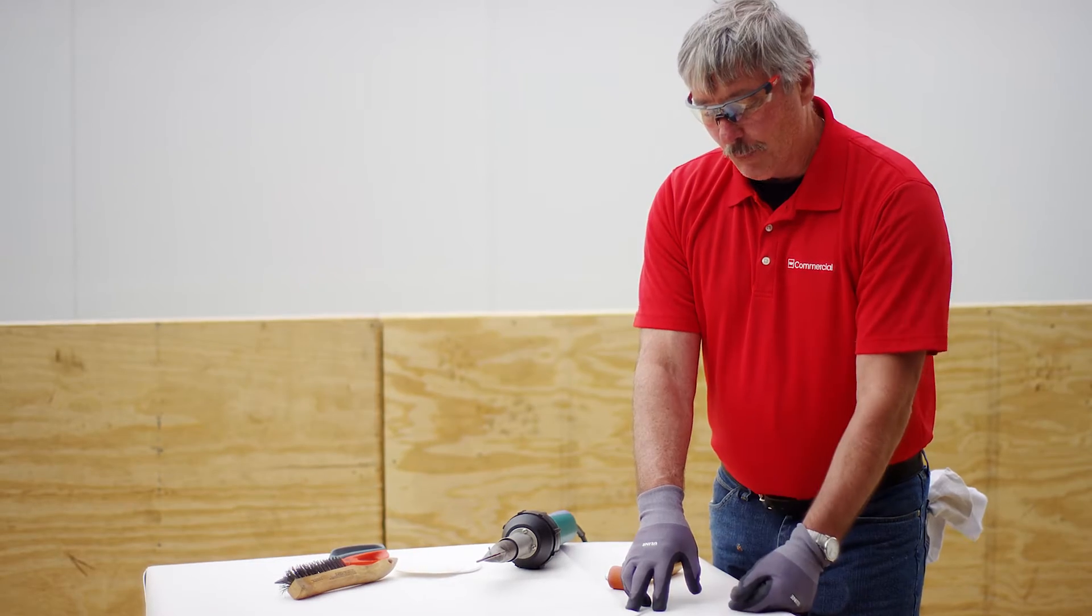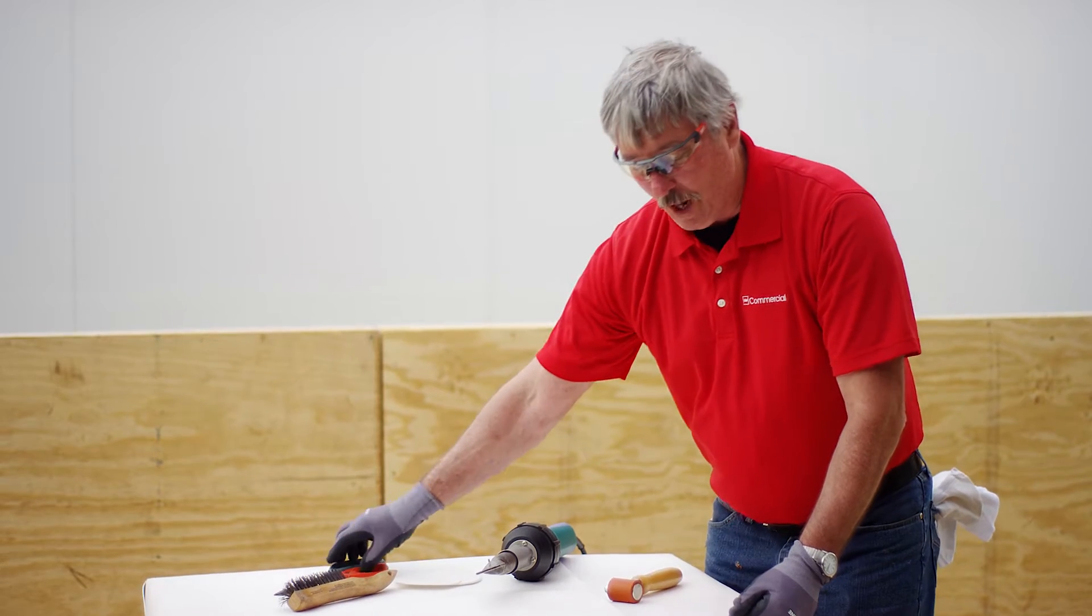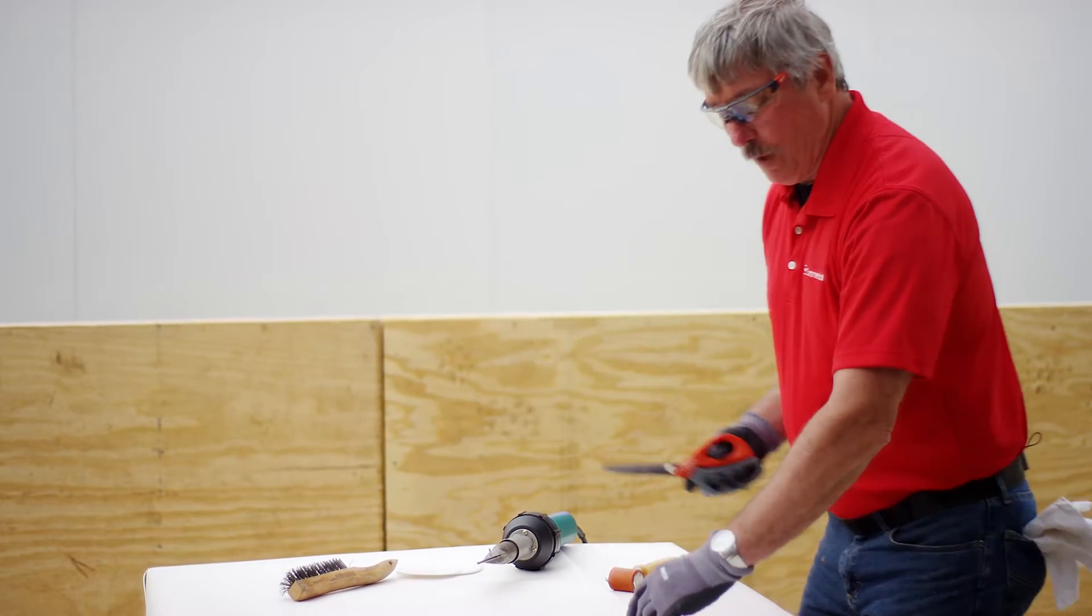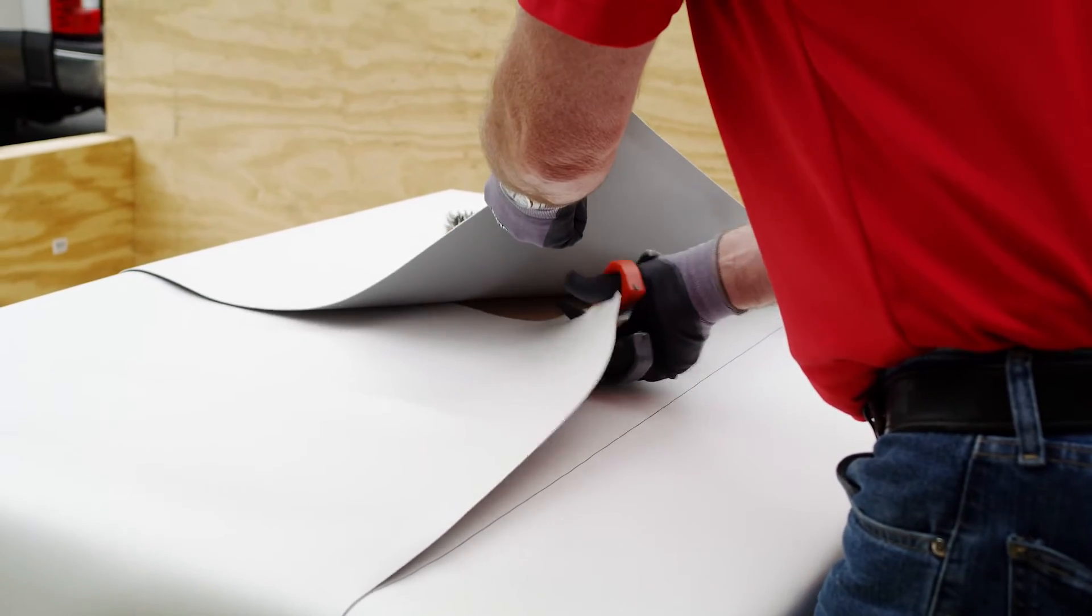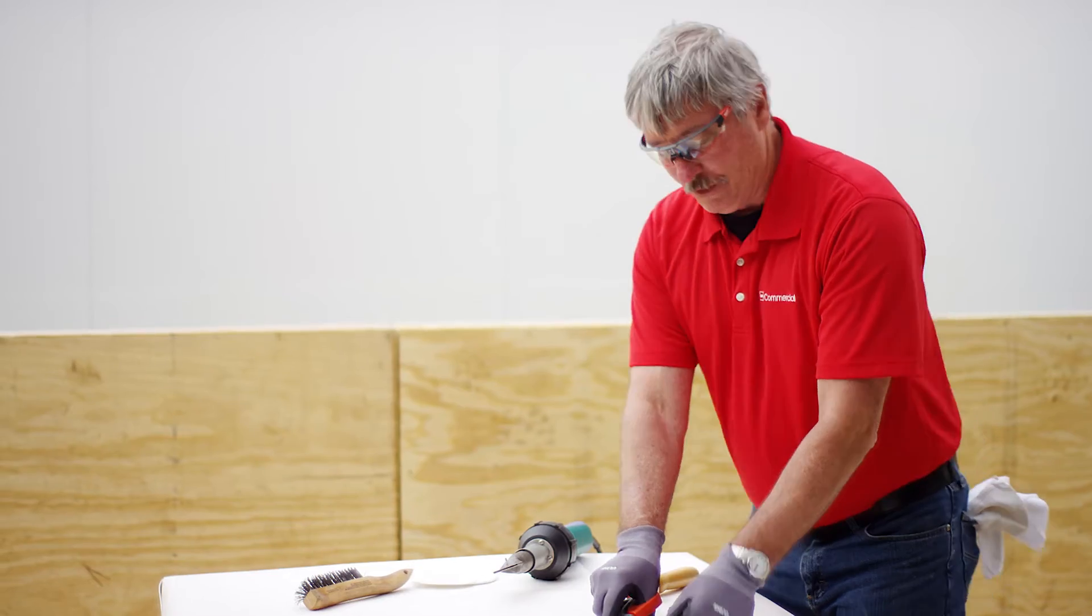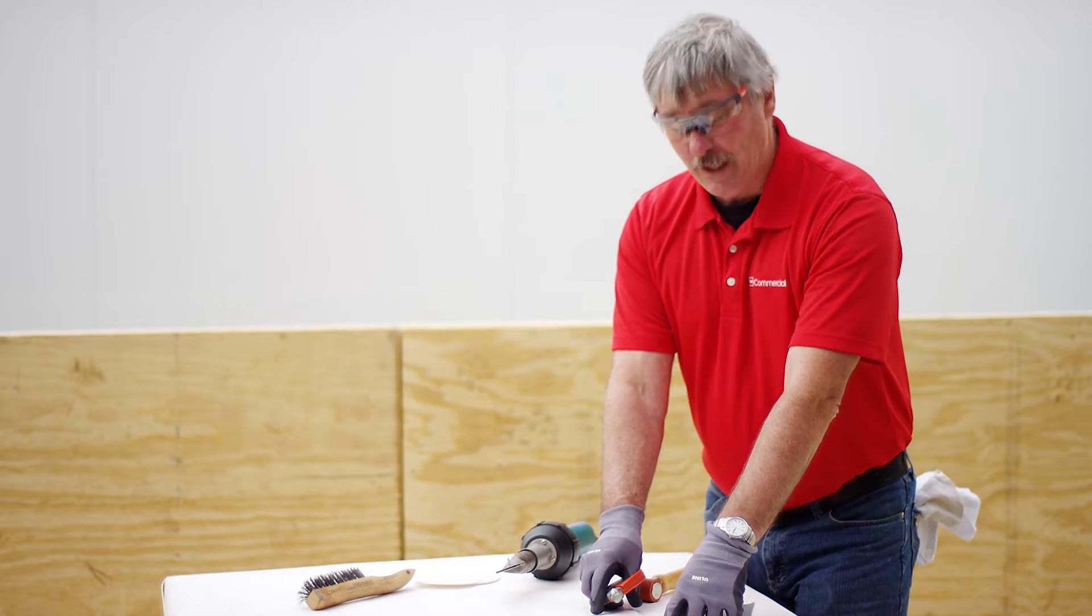So a way to eliminate problems with this is, before you weld this, a little trick is, wherever these meet, you just come in here and just kind of dog ear this back. So now my T-joint is actually eliminated to one area.